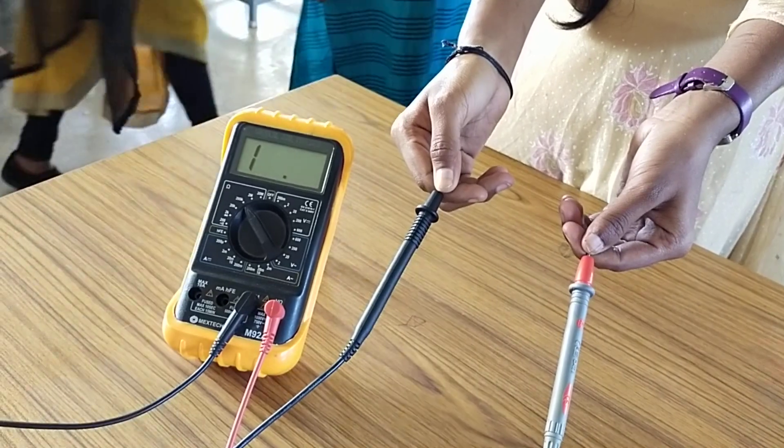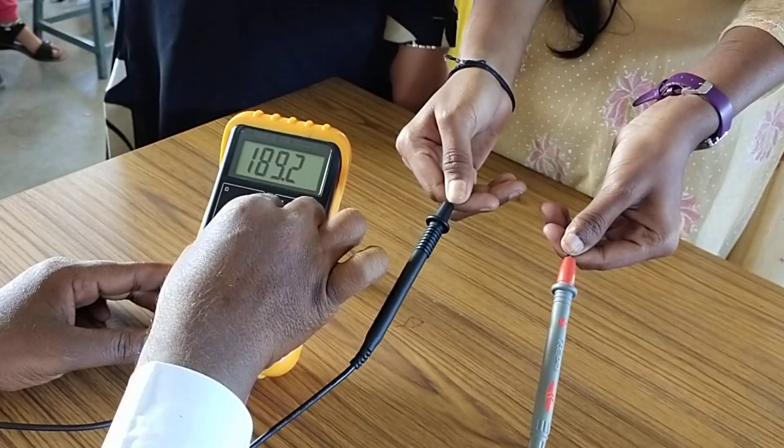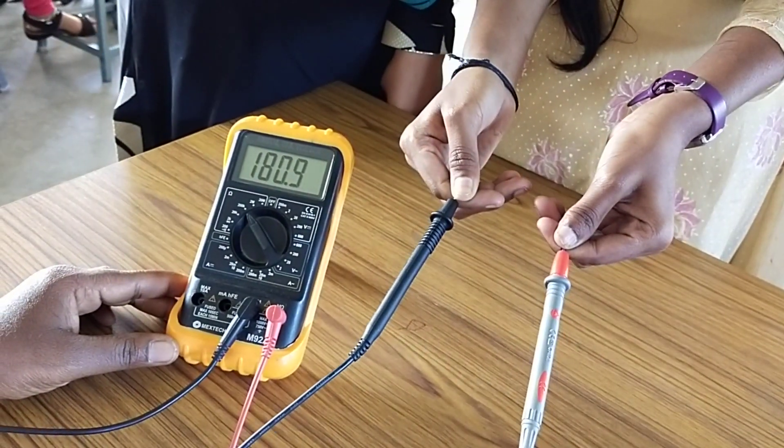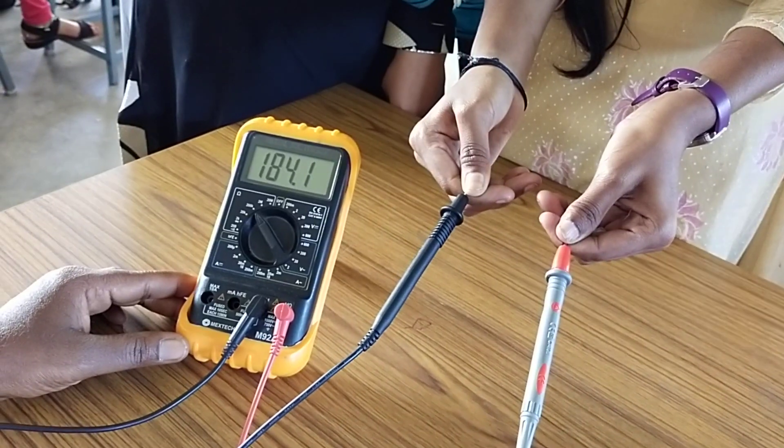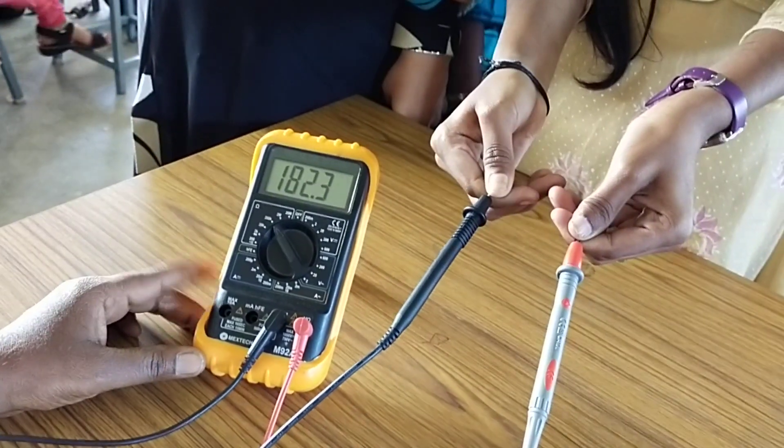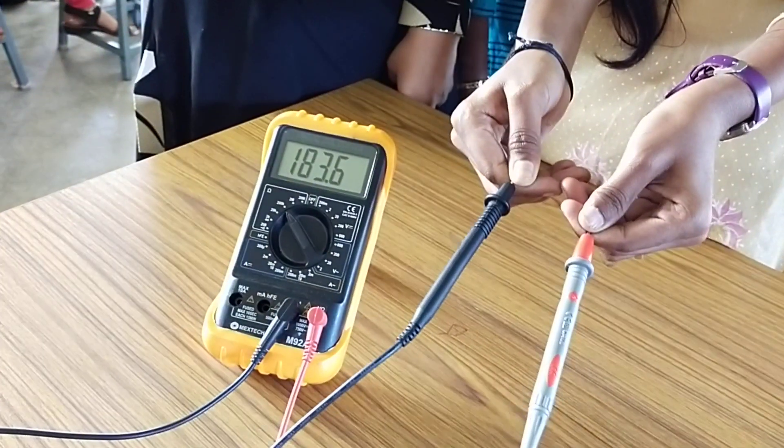Now another girl. 180, 180 ohm. Some high resistance is there, kilo ohm. High resistance. Skin resistance vary from boys to girls.